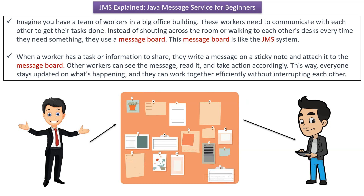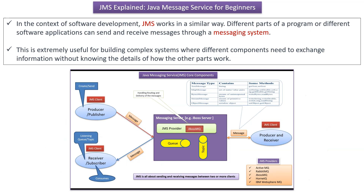Other workers can see the message, read it, and take action accordingly. This way everyone stays updated on what is happening and they can work together efficiently without interrupting each other. In the context of software development, JMS works in a similar way. Different parts of the program or different software applications can send and receive messages through a messaging system. This is extremely useful for building complex systems where different components need to exchange information without knowing the details of how other parts of the component work.